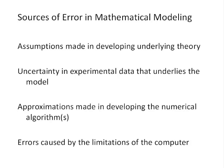We can have several sources of error in mathematical modeling. One is the assumptions that we make in developing the underlying theory of our mathematical model. Another is uncertainty in the experimental data that underlies the model, perhaps data used to determine model parameters. A third source of error is approximations that are made in developing the numerical algorithms themselves. We'll look at this a lot in Engineering 240 for each method we look at.